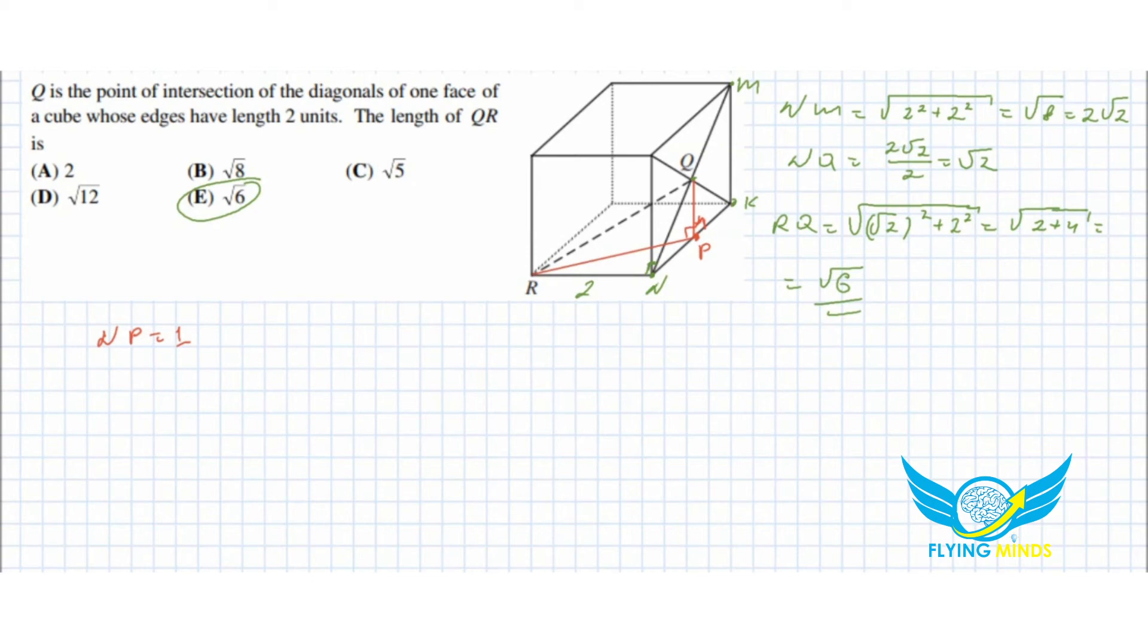We need to find RP and NP is one centimeter as well. NP is one centimeter and QP is one unit.